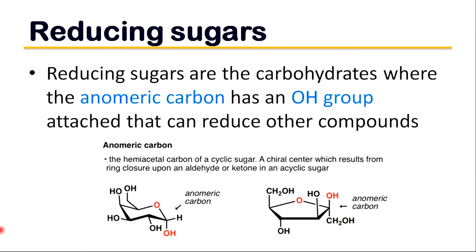Reducing sugars are sugars where the anomeric carbon has an OH group attached that can reduce other compounds. The anomeric carbon is the carbon derived from the carbonyl carbon — the ketone or aldehyde functional group of the open chain form of the carbohydrate molecule — and is a stereocenter. Non-reducing sugars do not have an OH group attached to the anomeric carbon, so they cannot reduce other compounds.